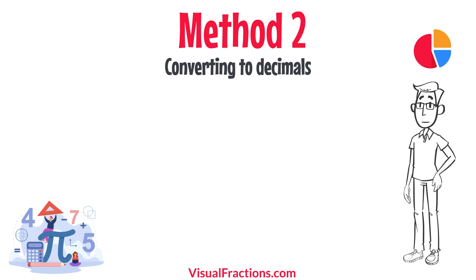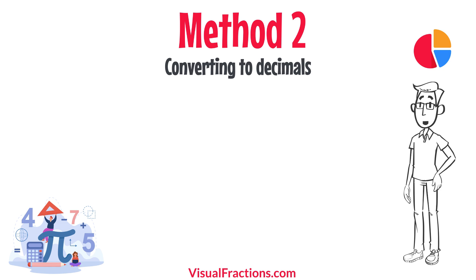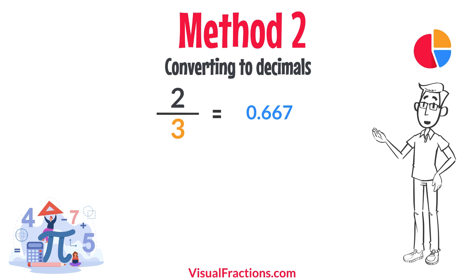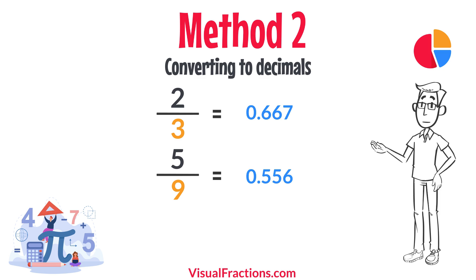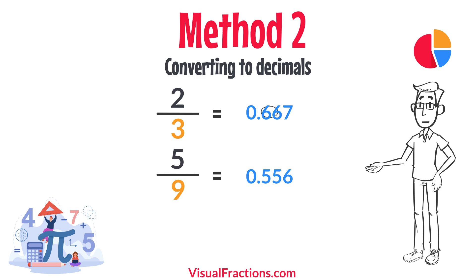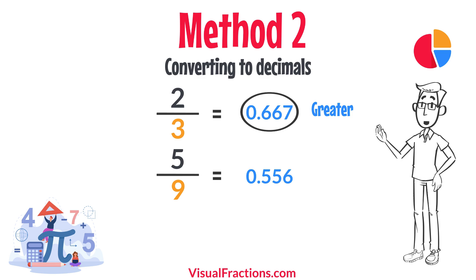For a second method, let's convert each fraction to a decimal. Using a calculator, divide two by three to get approximately 0.667, and divide five by nine to get approximately 0.556. This calculation shows that 0.667 is greater than 0.556, confirming that two-thirds is indeed greater than five-ninths.